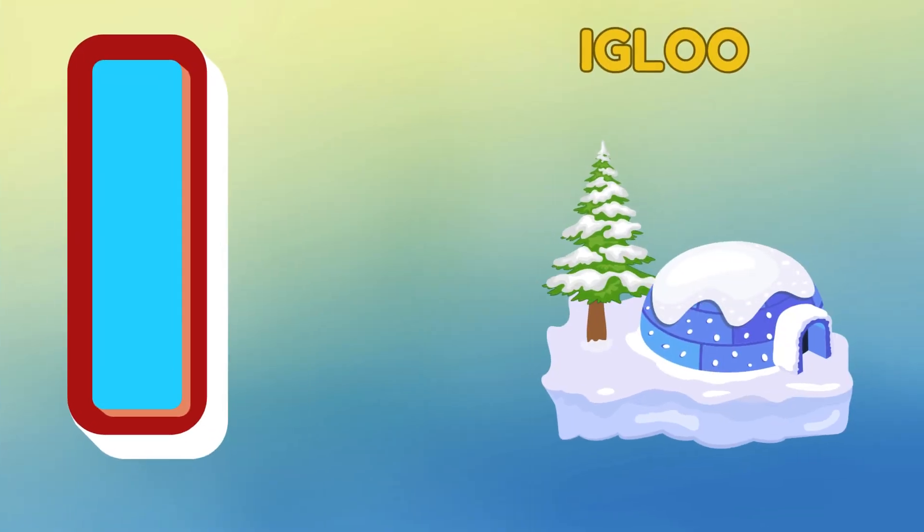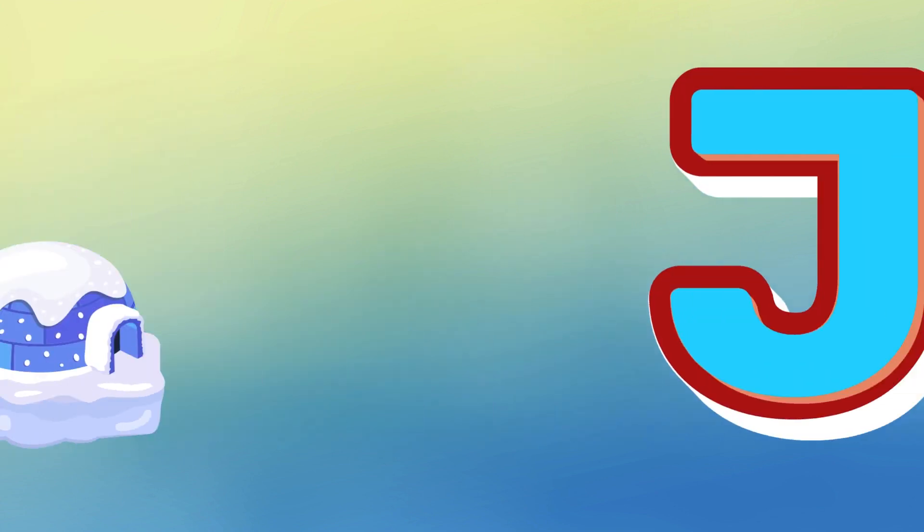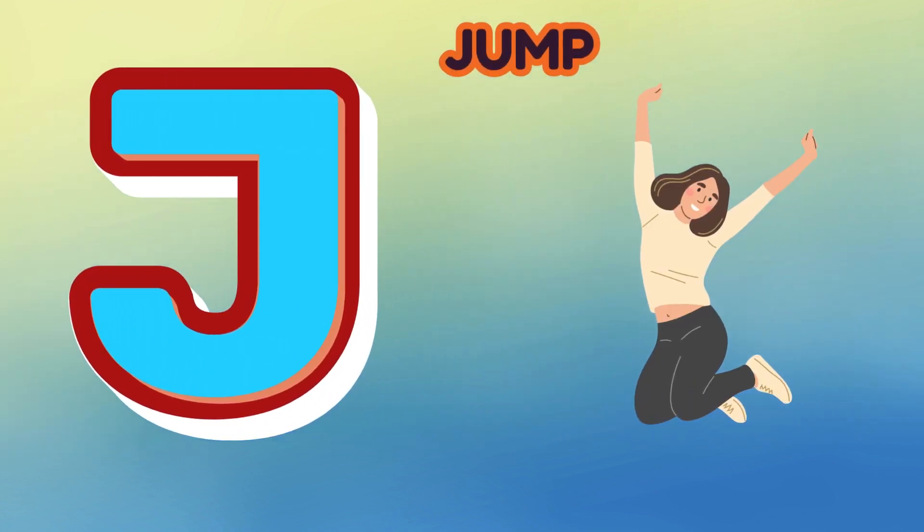I is for Igloo, I-I-Igloo. J is for Jump, J-J-Jump.